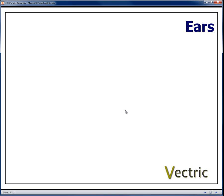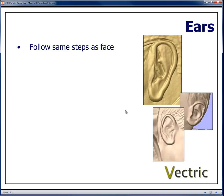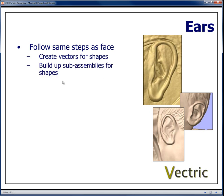Lastly I want to talk about ears. In our case we didn't have to really deal with ears — there was just a small part of George Washington's ear sticking out underneath the hair. Typically you're going to have to deal with these, certainly with people that have short hair where their ears will be showing. You just follow the same steps as we did with the face: create the vectors for the shapes you see in the ear — one for the outer edge then one for any shapes inside of that. Build up sub-assemblies using the 90-degree with a limit height, very much like we did with the detail face shapes.